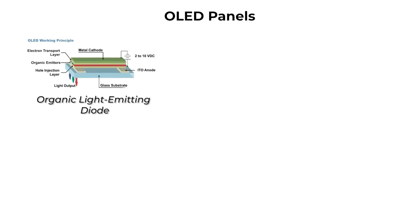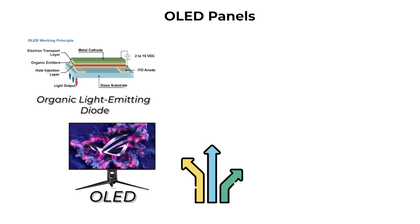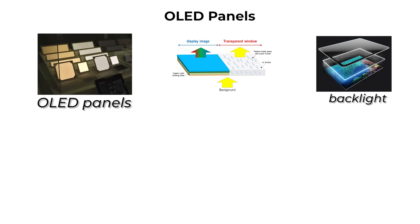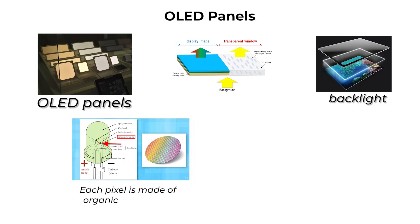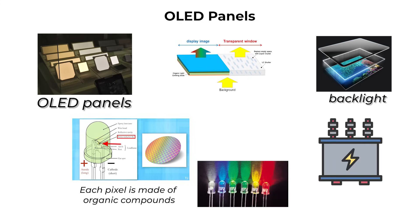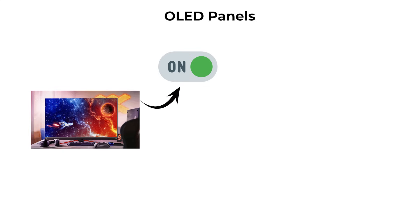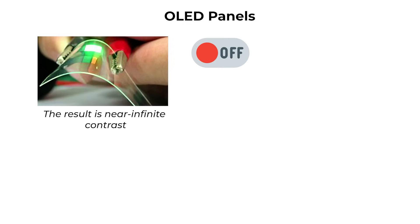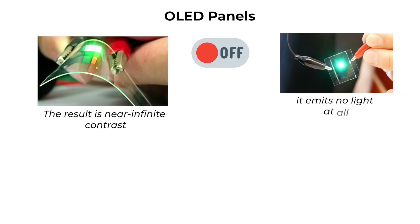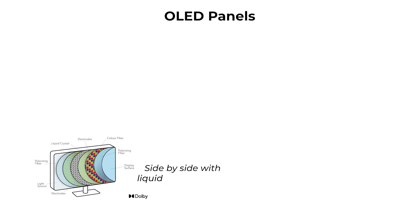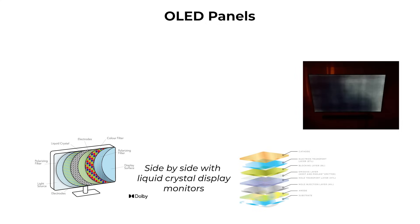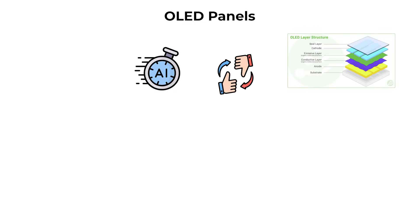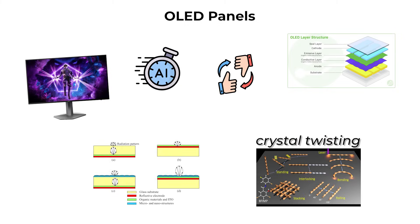OLED panels. Organic Light Emitting Diode, or OLED, is fundamentally different from liquid crystal display technology. Instead of using a backlight that shines through liquid crystals, OLED panels are self-emissive. Each pixel is made of organic compounds that produce their own light when an electric current is applied. This means every pixel can turn completely on or completely off independently of its neighbors. The result is near-infinite contrast. When an OLED pixel is off, it emits no light at all, producing a true black. OLEDs also offer excellent response times, often faster than any liquid crystal display panel, since no crystal twisting or alignment is required.